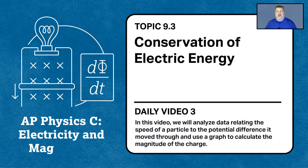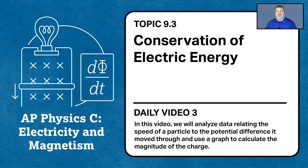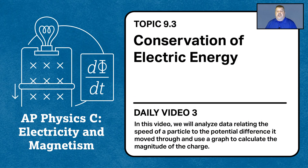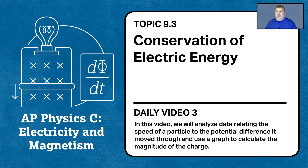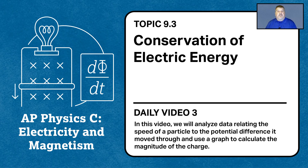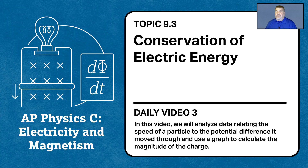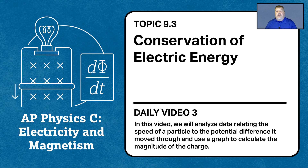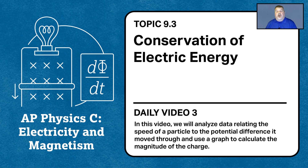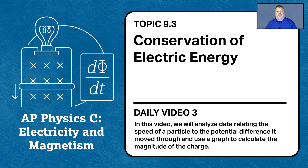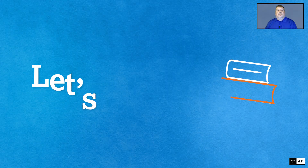Welcome to topic 9.3 on conservation of electric energy. In this third daily video, we're going to look at an experimental situation and analyze the data relating the speed of the particle to the potential difference that the particle moved through, and then use a graph of the data to calculate the unknown charge of the particle. I'm Scott Seacrest, and I teach AP Physics C, Electricity and Magnetism, at St. Francis DeSalle School in Toledo, Ohio.